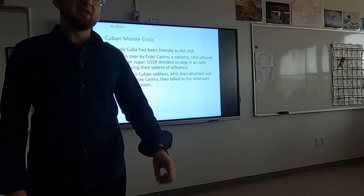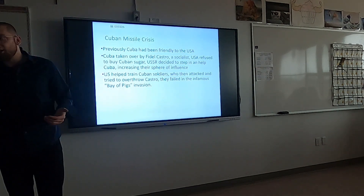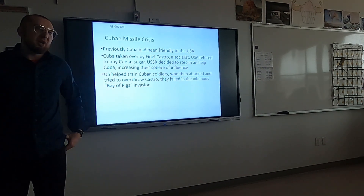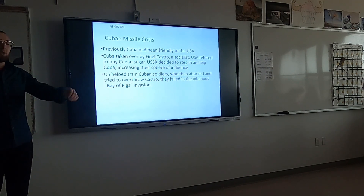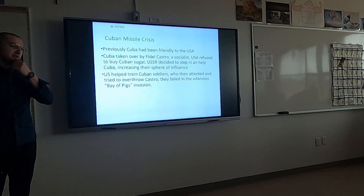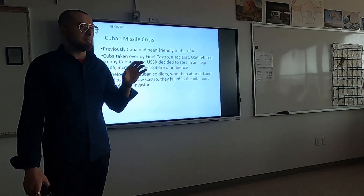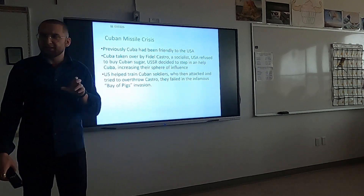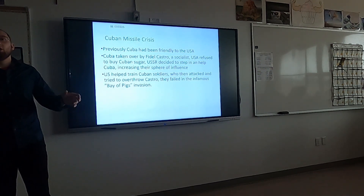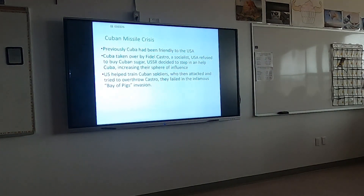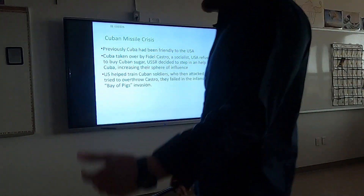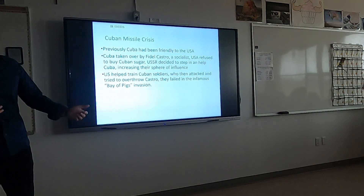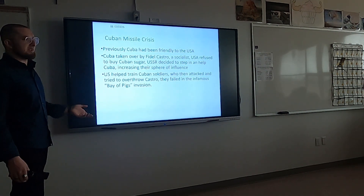Cuban Missile Crisis: Cuba is an island not far off the coast of America. It was initially friendly to the Americans but they switched sides and became communist. They agreed to allowing the Russians to have weapons there. Looking at the map, Cuba is right next to America, meaning their weapons could easily reach major US cities including the capital, putting America under a lot of tension and threat.